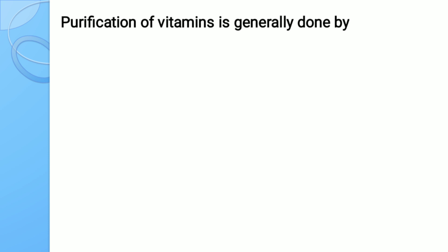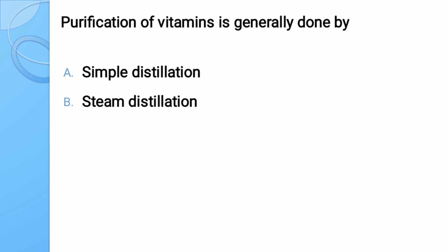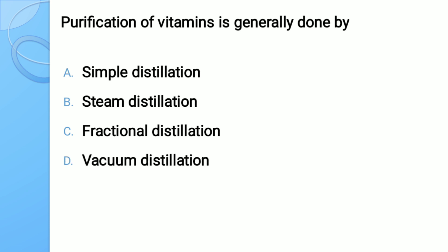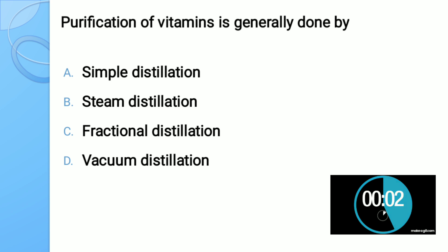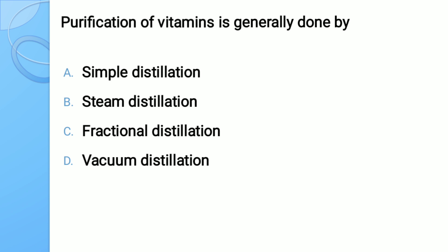Question number eleven: Purification of vitamins is generally done by — options: A) simple distillation, B) steam distillation, C) fractional distillation, D) vacuum distillation. The correct answer is vacuum distillation — vacuum distillation is used for the purification of vitamins.